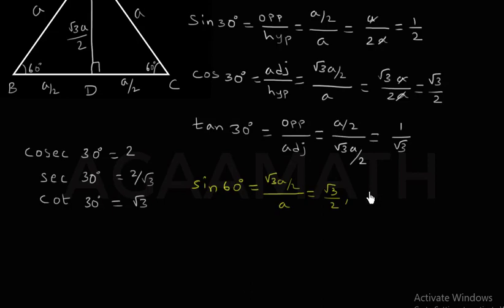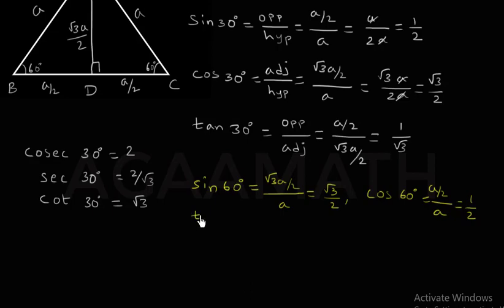And when I go with cos 60 degrees — cos 60 is nothing but adjacent by hypotenuse. The adjacent side is a/2, divided by hypotenuse a. When we simplify it, we get 1/2. So that is the cos 60 degrees value. And next, tan 60 degrees — opposite by adjacent. The opposite for 60 degrees is √3·a/2 divided by its adjacent a/2. When we simplify it, we get just √3.